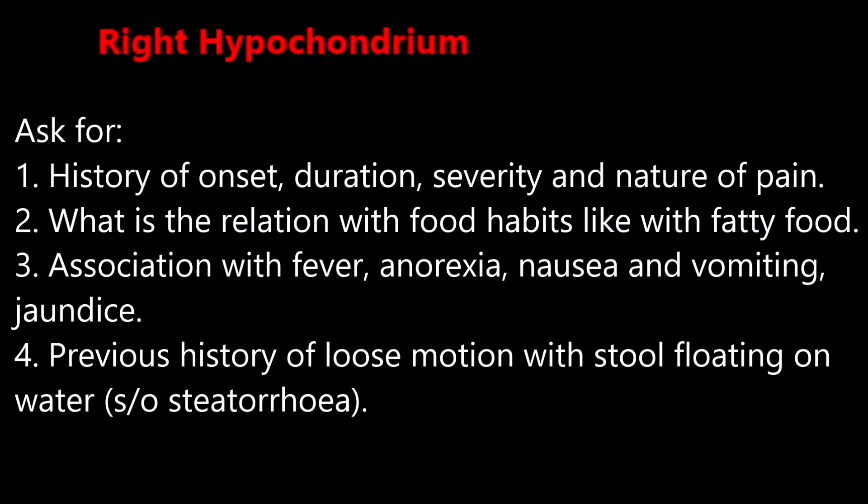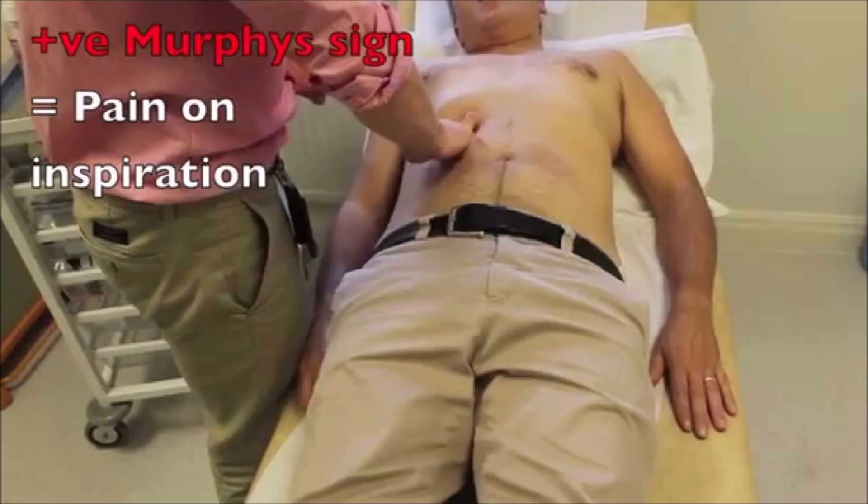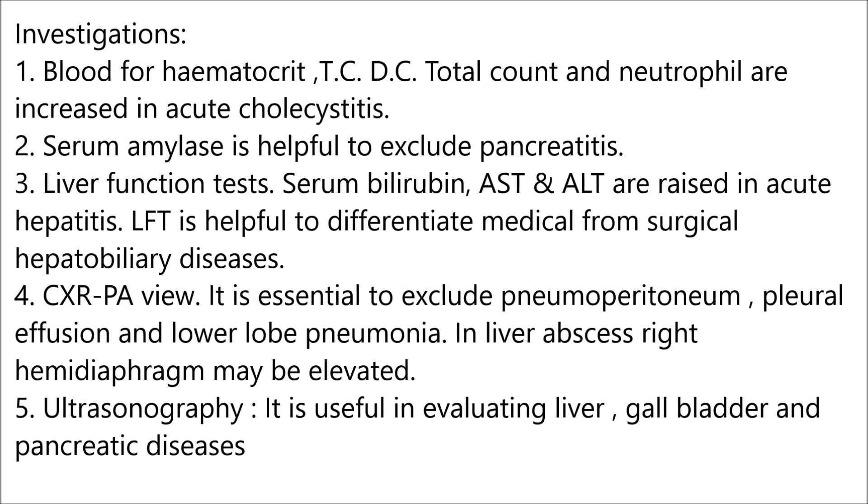If the pain is in the right hypochondrium, ask for the history of onset, duration, severity, and nature of pain. What is the relation with food habits — such as with fatty food? Is it associated with fever, anorexia, nausea, vomiting, jaundice? Previous history of loose motions with stool floating on water, suggestive of steatorrhea. Look for any swelling and scar marks; palpate to notice any lump, tenderness, and rigidity. Look for Murphy's sign, percuss for liver dullness, and check for any intercostal space tenderness.